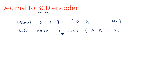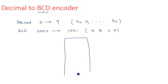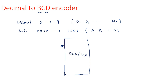First we need to draw the truth table for encoding from decimal to BCD, then Kmaps, and then the logic circuit. The IC that is going to convert the given decimal number to BCD — this is an encoder that converts a decimal number into a BCD number.